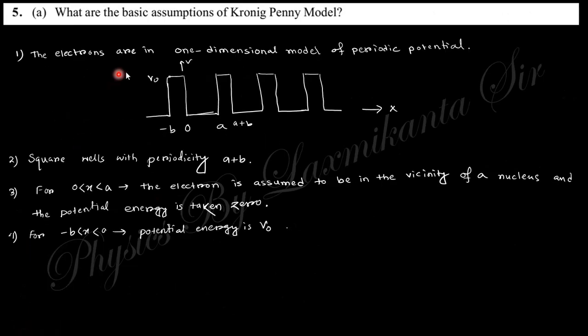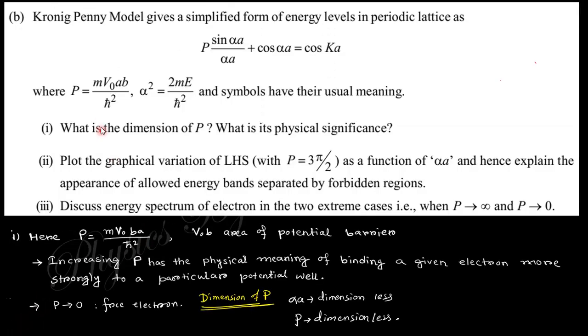Next question: what is the basic assumption of the Kronig-Penney model? The Kronig-Penney model assumes a periodic potential arrangement within the atoms. This portion is the zero potential for the nucleus, and this is where one electron is located.